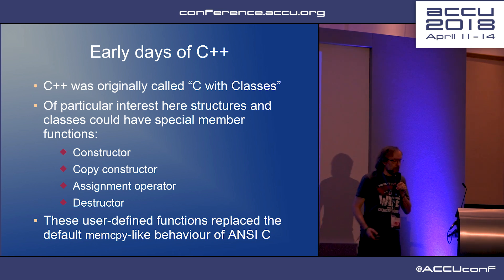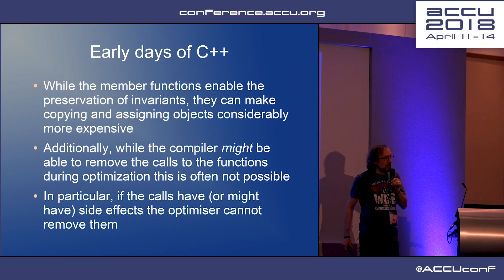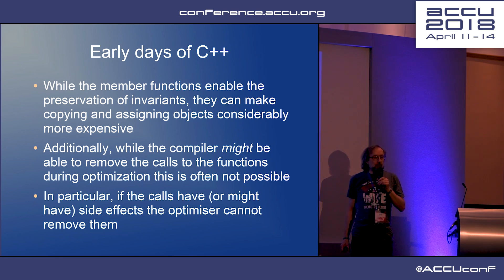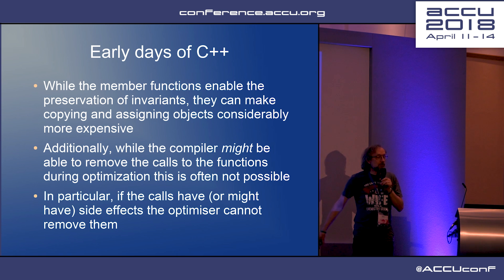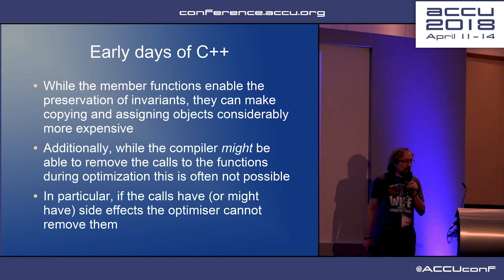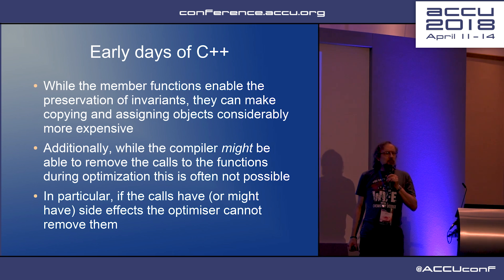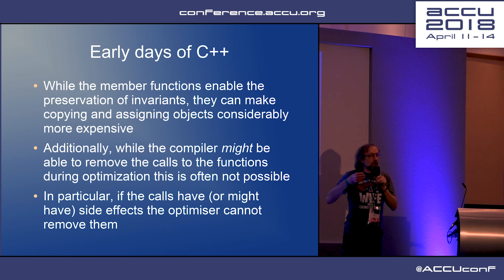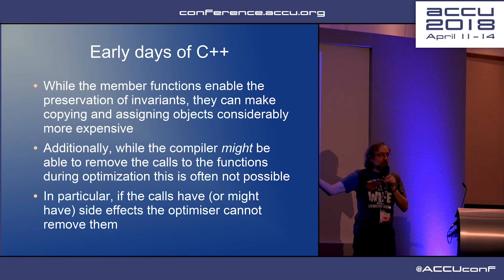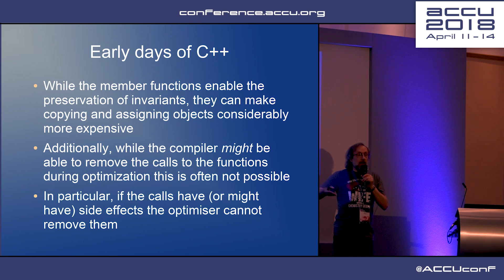Enter C++ — first called C with classes. Structures and classes now have extra stuff: special member functions — constructors, copy constructors, assignment operators, destructors. So you can't necessarily simply call memcopy. You have to replace some of those memcopy calls with calling potentially user-provided functions, which means the cost becomes even more: it's not just copying a few bytes of memory, but also a function call and return.